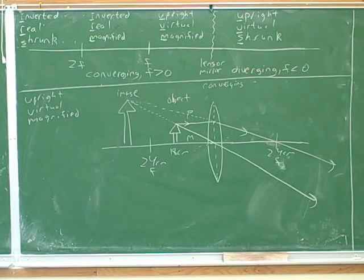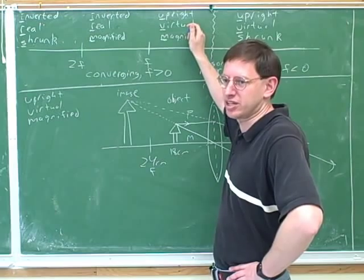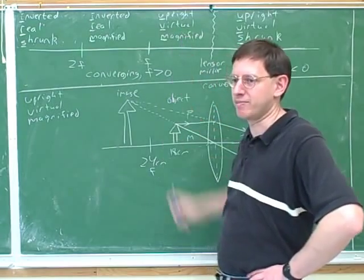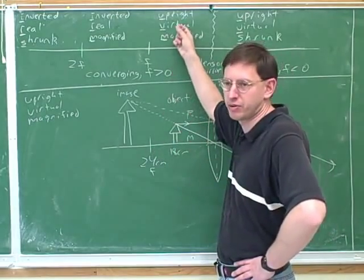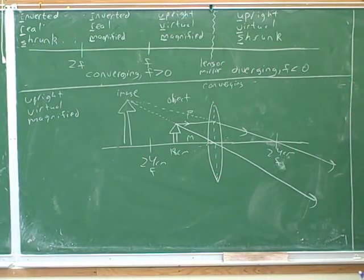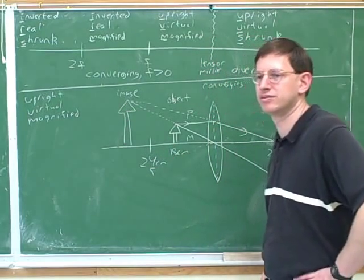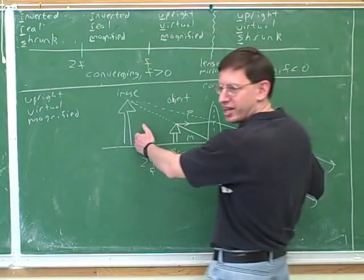A real image is on the same side. This applies when we're talking about where the position of the object is. This chart tells you when you put the object in this position, it predicts the image — but these are not the positions of the images, they're the positions of the object. In this case, for example, we have an object that's inside the focal length. So all of these points here are referring to where you're putting the object, not where the image comes out.